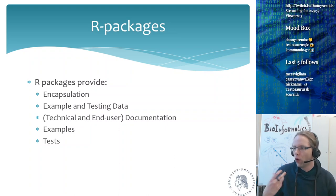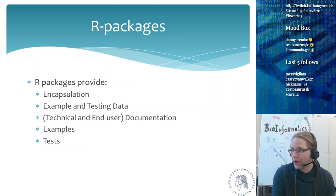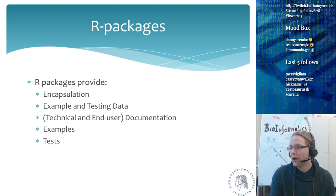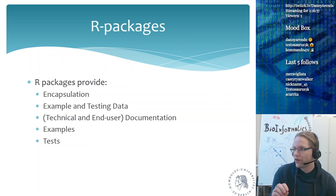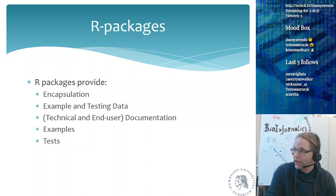R packages do all of this. An R package provides encapsulation — it defines what your software will do and what it won't do. Because of how R packages are structured, they will have examples and tests. The examples appear at the bottom of the documentation and are also used as tests for the software. The documentation an R package provides is generally technical and end-user documentation. When you compile your package it will run all the different examples, and if the examples work, this is a guarantee that your software works.